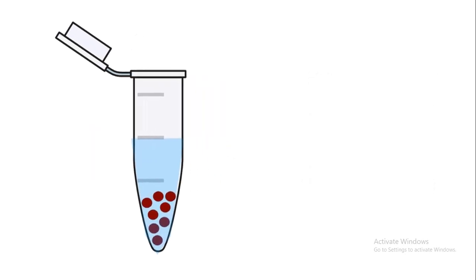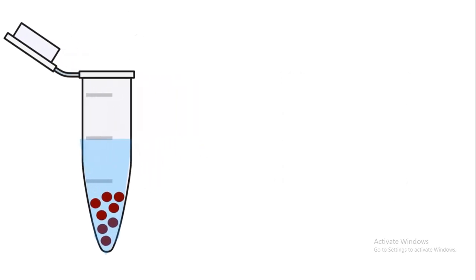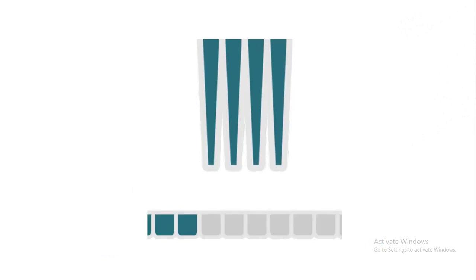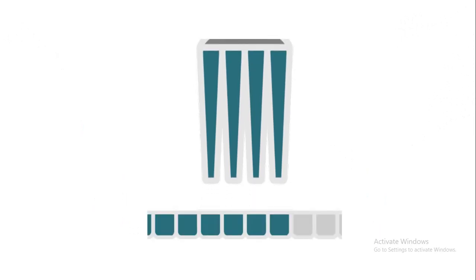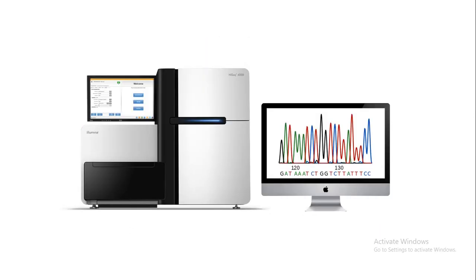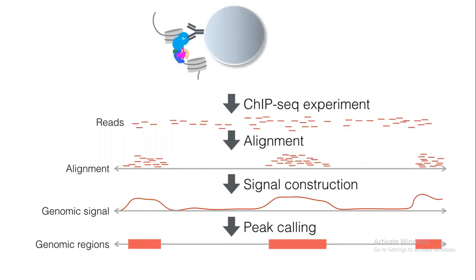What is left after pulling down with the bead is the pull-down fraction, and we can take out the pull-down fraction with a pipette. This pull-down fraction is processed and loaded onto a DNA sequencing machine, and DNA sequencing gives you a readout in the form of sequences.